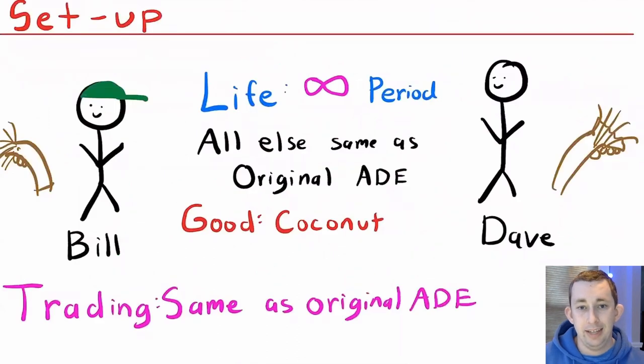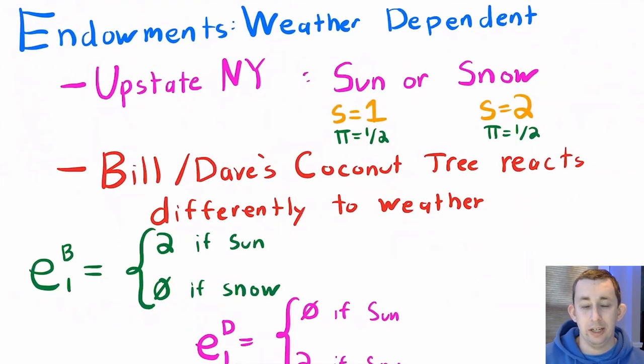For the setup of this problem, it's exactly as we had before. We still have Bill and Dave, the only good in this world is a coconut, and they are going to live for an infinite number of periods. The trading is going to be the same as the initial Arrow-Debreu Equilibrium, so they can trade IOUs across both states and time now. Bill and Dave still each have a coconut tree. Their coconut tree reacts differently to different states of the world or different types of weather. We live in upstate New York. Upstate New York can be sunny and we make dry coconuts, or it can be snowy and we have frozen coconuts. We'll denote sunny by S equals one and snowy by S equals two.